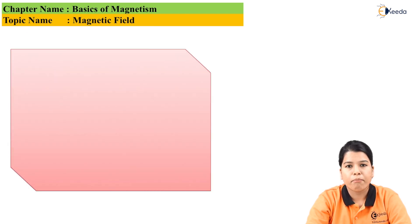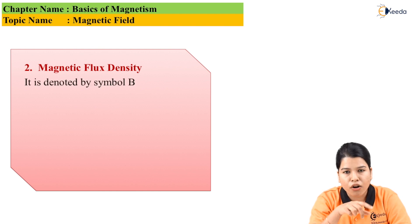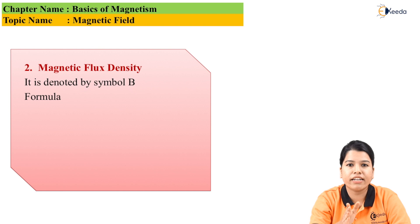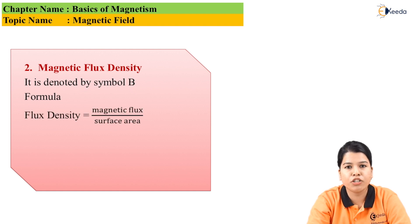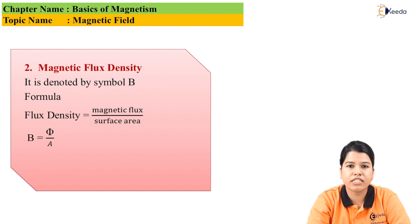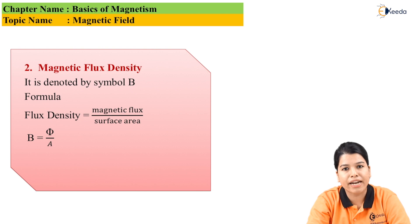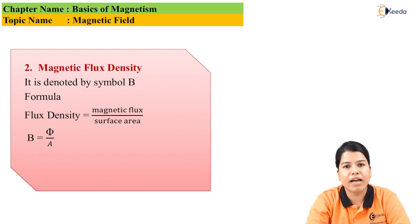The next point related to the magnetic field is magnetic flux density. Magnetic flux density is the magnetic flux per unit surface area of the magnet, measured at right angles to the magnetic field. It is denoted by the symbol B and its unit is weber per meter square. The formula for magnetic flux density is: B = φ / A.